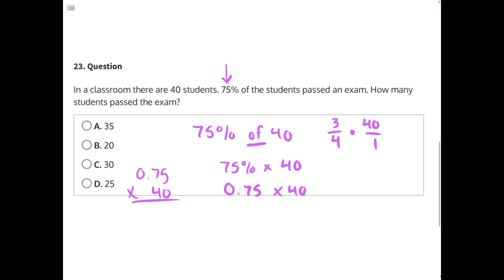So we could do 3 times 40, and actually before we do that, we can look diagonally and see that 40 and 4 both have a common factor of 4. So if we factor out 4 from 4, we are left with 1. If we factor out 4 from 40, we're left with 10.